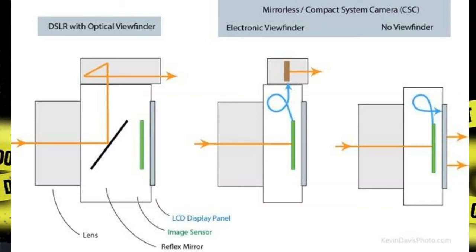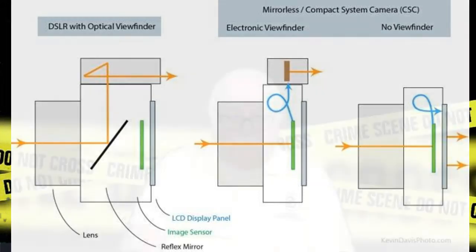Again, you've got the light coming through the lens on the far left, striking the mirror, being reflected up to the ground glass. You look through the viewfinder, you focus, and you capture your image. The one in the middle: the light comes through the lens, strikes the CCD or digital exposure medium, and the image is sent up to the eyepiece so you can focus. And the one on the far right: you see the image come through the light, strike the digital media, and you see what you're going to capture on the display on the back of the camera.